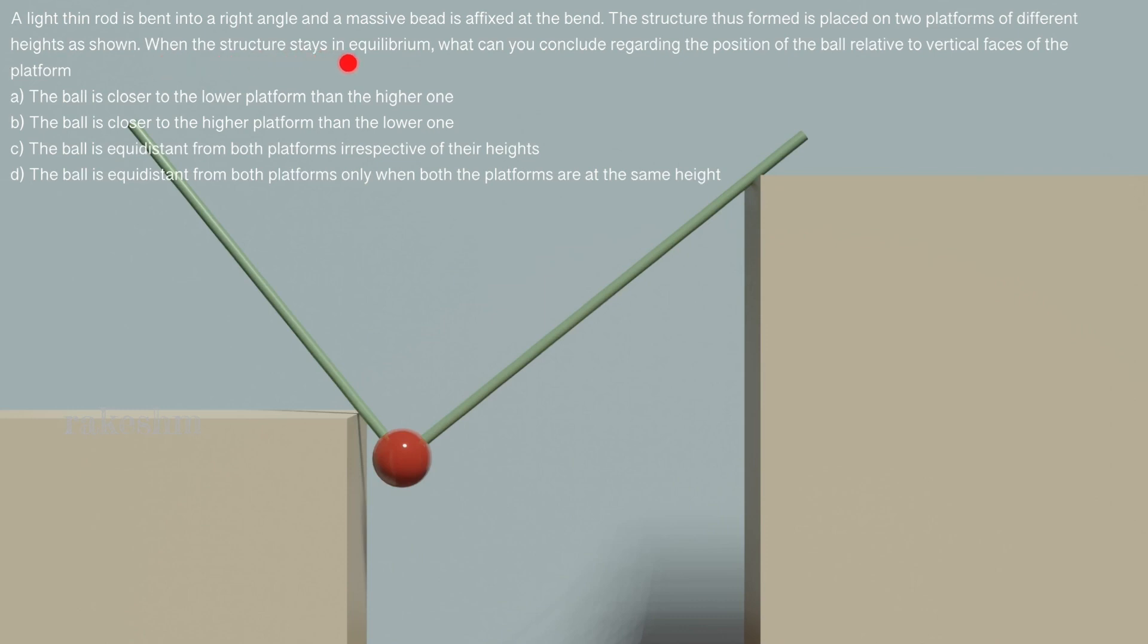When the structure stays in equilibrium, what can you conclude regarding the position of the ball relative to the vertical faces of the platform? So when this structure comes to equilibrium, what is the position of the ball relative to these vertical faces of the platform?